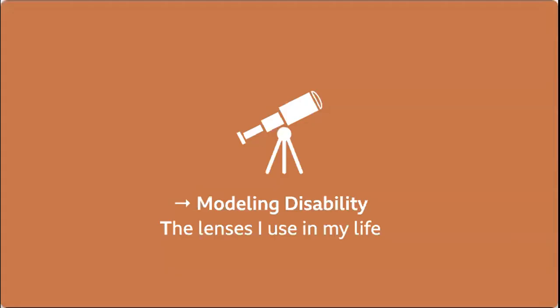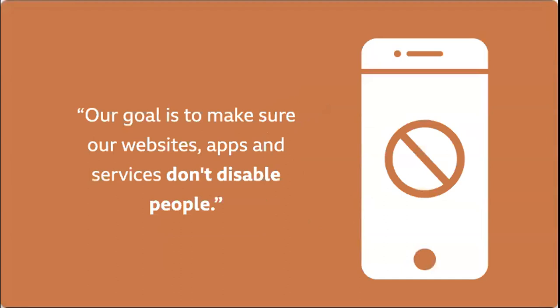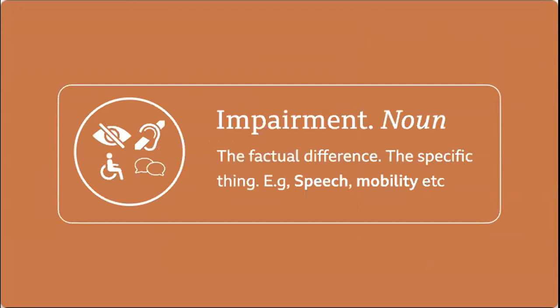So: modelling disability and the lenses I use in my life. I work on the BBC Digital Accessibility team - a very small team within BBC User Experience and Design. Our goal is to make sure that our websites, apps and services don't disable people. Quite often people pause and go, 'isn't accessibility for disabled people?' And then I can say, well, there are a few different ways of thinking about this. What most people would call a disability, I would generally call an impairment.